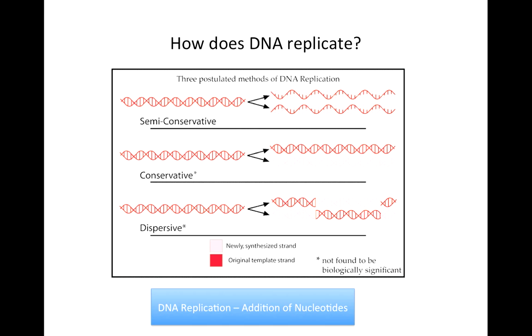You can see from the diagram that each daughter molecule contains one new strand and one old strand. The conservative replication scheme postulates that the double-stranded DNA molecule reforms after the new molecule is created so that the new molecule is made up of two newly synthesized strands.